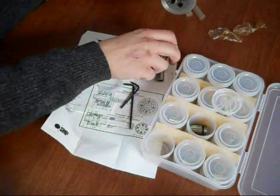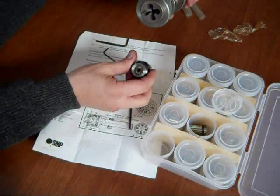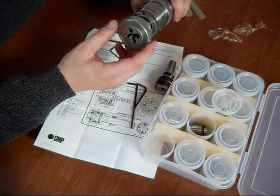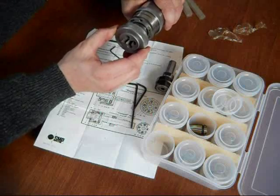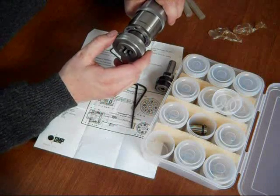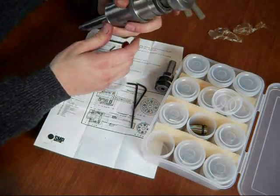Also, likewise with the collet chuck, taps can be used in the collet chuck. And the tap would then follow the pitch of its own design and not be influenced by the lead screw, feed screw of the tail stock. It's a pretty neat little system.